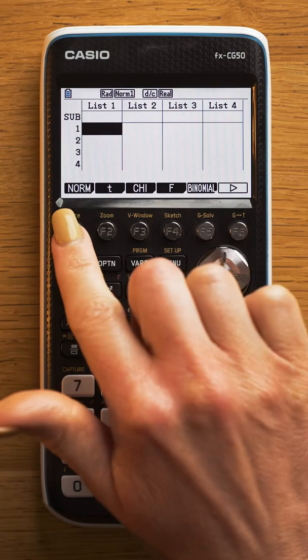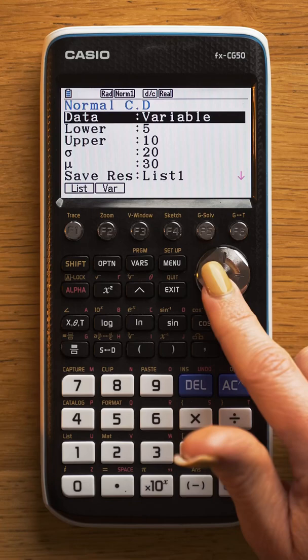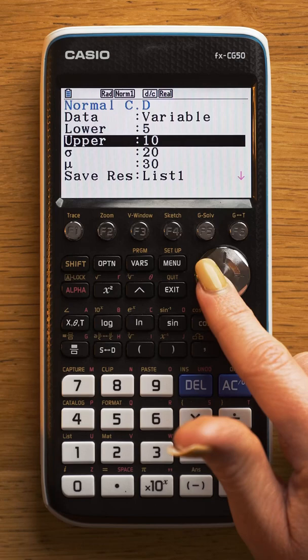You're going to be using, for most questions, the normal CDF. You want to make sure that the data is selected is variable, then you're going to have an upper and a lower boundary, so this could be the data is between 5 and 10.